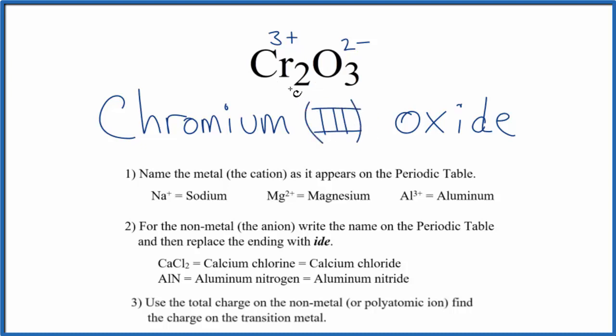So the name for Cr2O3 is chromium (III) oxide. And the three, that comes from the ionic charge on each of these chromium atoms.